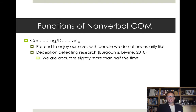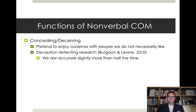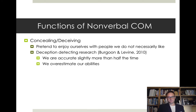Burgoon and Levine in 2010 conducted a study and found that we accurately interpret deceptive behaviors slightly more than half the time—essentially a 50/50 chance. So if someone tells you they're really good at catching people in lies, you now have empirical evidence suggesting otherwise. We overestimate our ability to detect deception in other people's behavior.